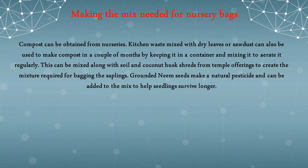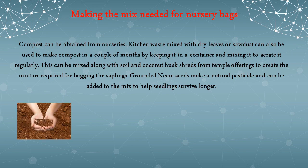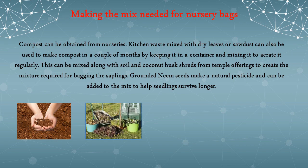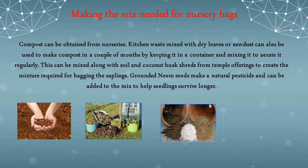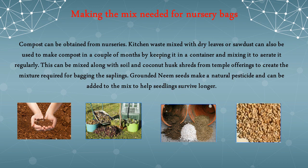The third step is making the mix needed for the nursery bags. Compost can be obtained from nurseries, or kitchen waste mixed with dry leaves or sawdust can be used to make compost over a couple of months by keeping it in a container and mixing it regularly to aerate it. This can be mixed with soil and coconut husk to create the mixture required for bagging the saplings. Grounded neem seeds make a natural pesticide and can also be added to the mix to help seedlings survive longer.